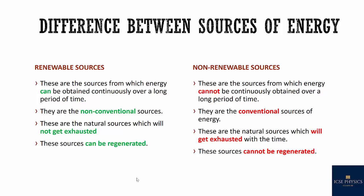What is the difference between the two sources? Renewable sources are sources of energy which can be obtained continuously over a long period of time, whereas non-renewable sources cannot be continuously obtained for a long period. Renewable sources are also known as non-conventional sources, while non-renewable sources are known as conventional sources. Renewable sources are natural sources which will not get exhausted, whereas non-renewable sources easily get exhausted with time. Renewable sources can be regenerated; non-renewable sources cannot be regenerated.